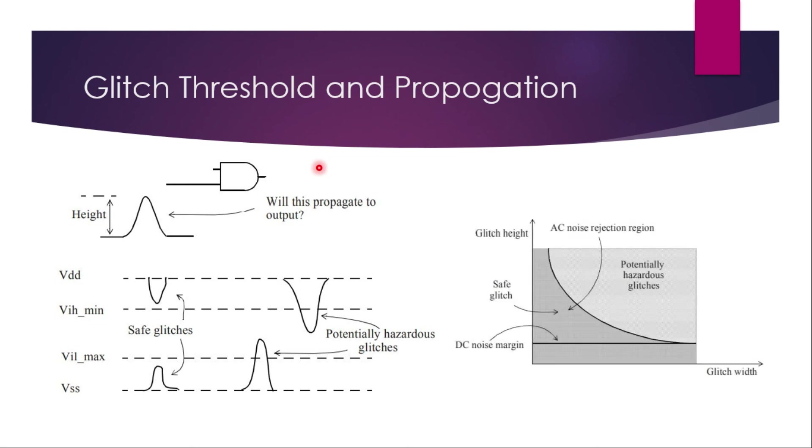We have two types of margins. One is the DC margin, which does not vary with the width. If you take this as glitch width on the X axis, DC margin does not vary with glitch width, which is constant. But AC margin, till this point is fine. As the glitch width increases, AC margin also, it results into potentially hazardous glitch.